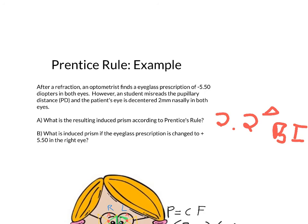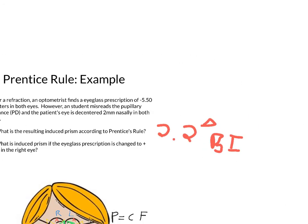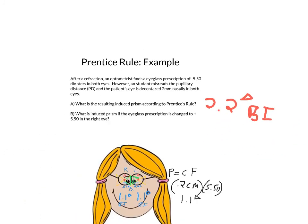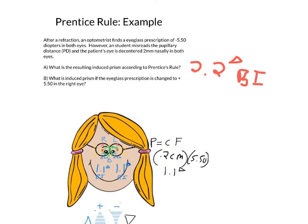This can cause a problem. Because the student misread the pupillary distance (PD), there is now an induced prism of 2.2 prism diopters caused by misalignment of the PD. That can cause clinical problems, and this comes from the concept of Prentice's Rule.